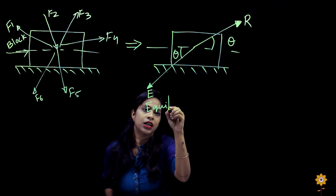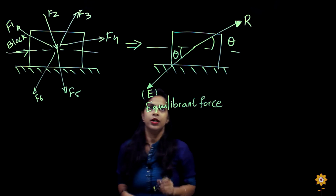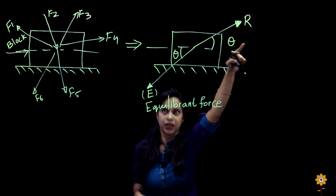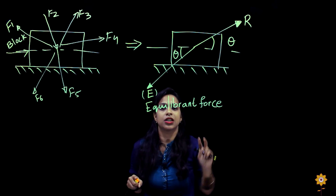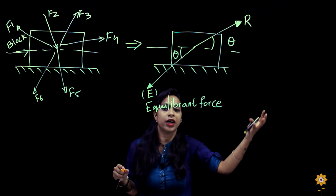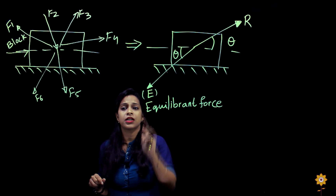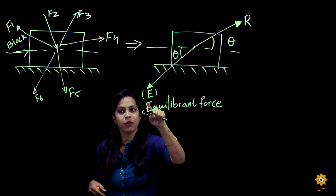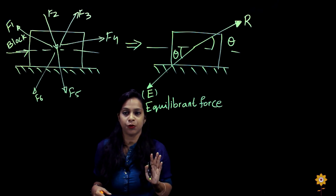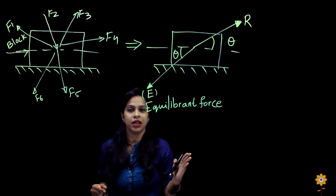This equilibrium force is denoted with a capital E. This force will cancel out all the effect of the resultant force. Because they are in opposite directions and of the same magnitude, they cancel each other out and the net effect on the object is zero. The equilibrium force must be of equal magnitude, opposite in direction, and at the same angle as the resultant force. It will maintain the original condition of rest or uniform motion of the object.